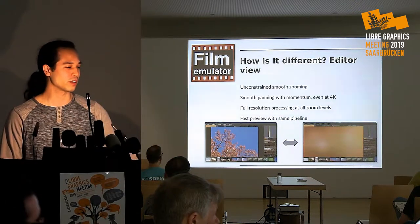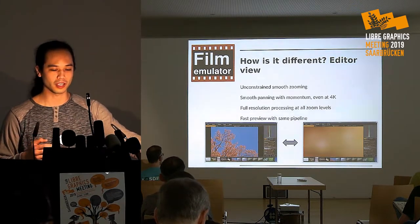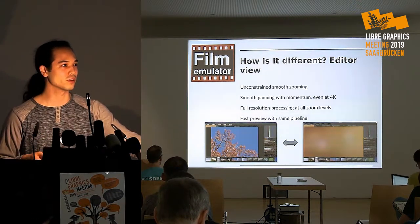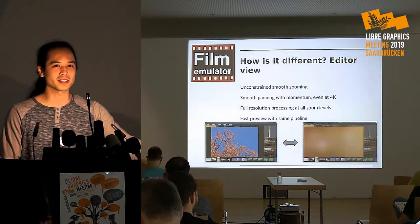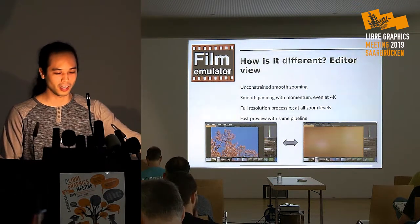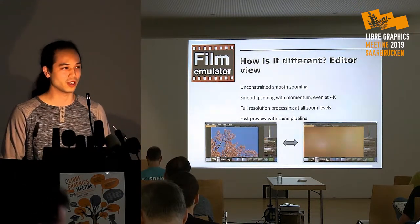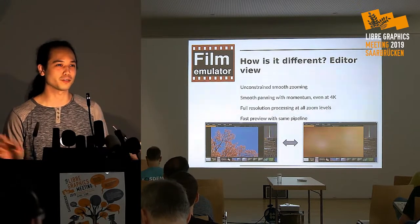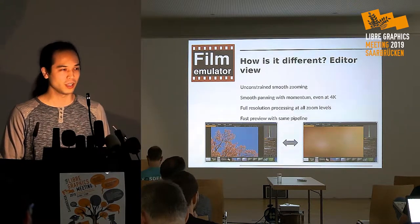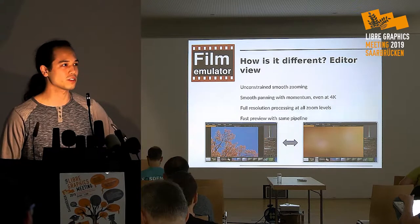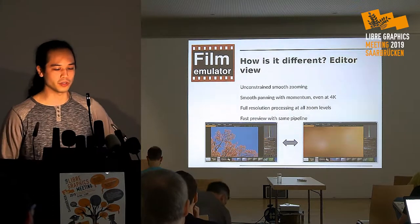One thing I was very insistent on when I started the project was having a very polished editor view. It has unconstrained smooth zooming about the mouse cursor anywhere in the frame. Back when I started, a lot of photo editors had janky zooming and very slow panning. But I can have 60fps full-resolution 4K screen panning around at any zoom level in Filmulator. It also has a fast preview of the same pipeline for responsiveness to sliders, and eventually recomputes at full resolution.